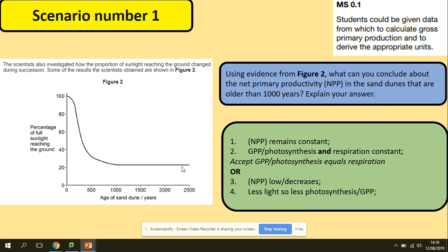The net primary productivity will be low because here the percentage of the sunlight is around 20, so it's not going to be enough light for photosynthesis. Obviously, it will be less of the gross primary productivity.